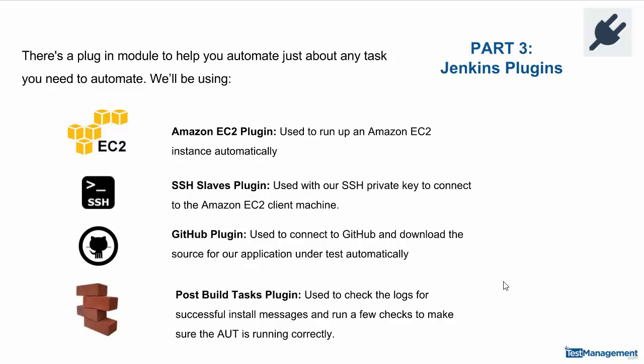In module four, we'll look at how to install these plugins and take each one in turn — Amazon EC2, SSH, Git, and post build tasks — and install those in our Jenkins setup.